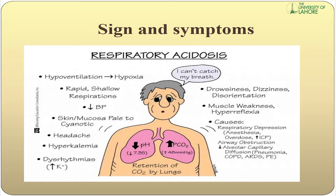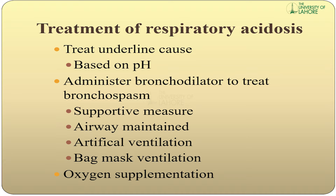Causes of respiratory acidosis include respiratory depression from anesthesia, overdose of drugs, increased intracranial pressure, alveolar-capillary diffusion impairment, pneumonia, COPD, ARDS, and pulmonary embolism. Treatment includes treating the underlying cause, administering bronchodilators for bronchospasm, and supportive measures such as maintaining the airway, artificial ventilation, bag-mask ventilation, and oxygen supplementation.